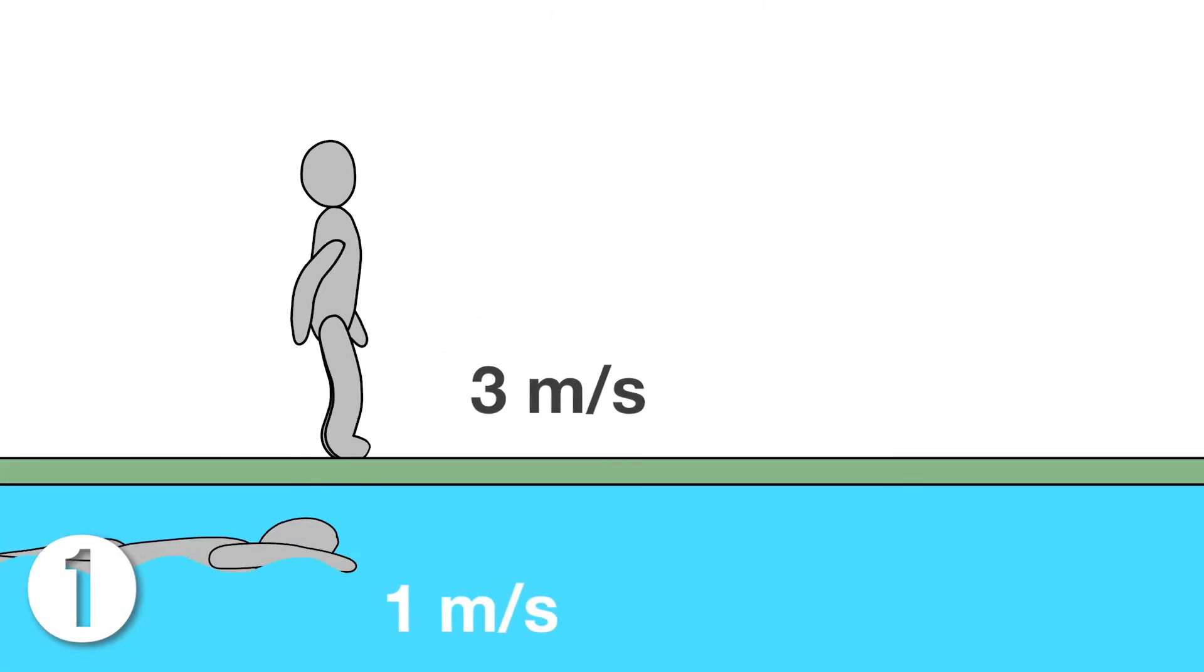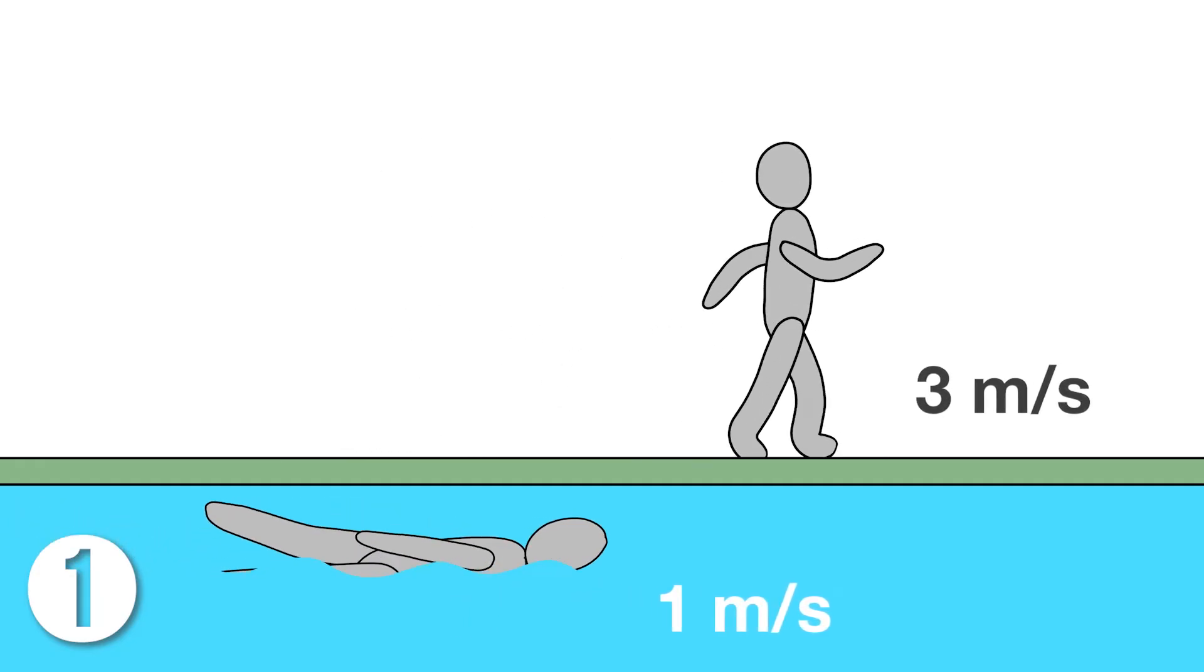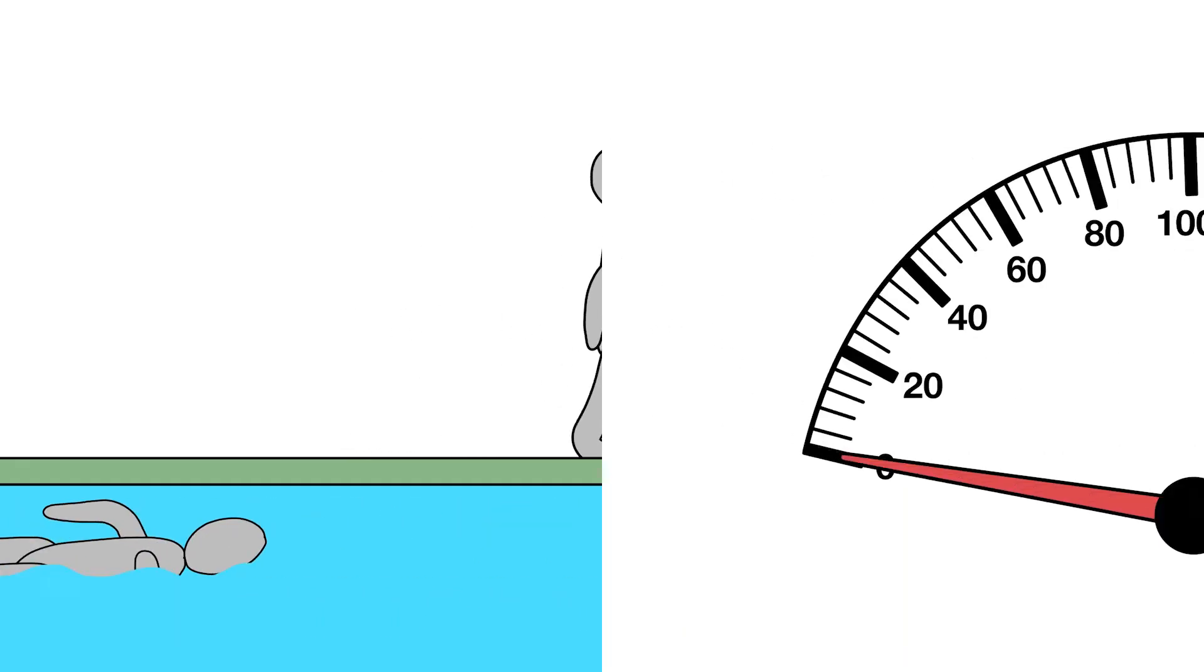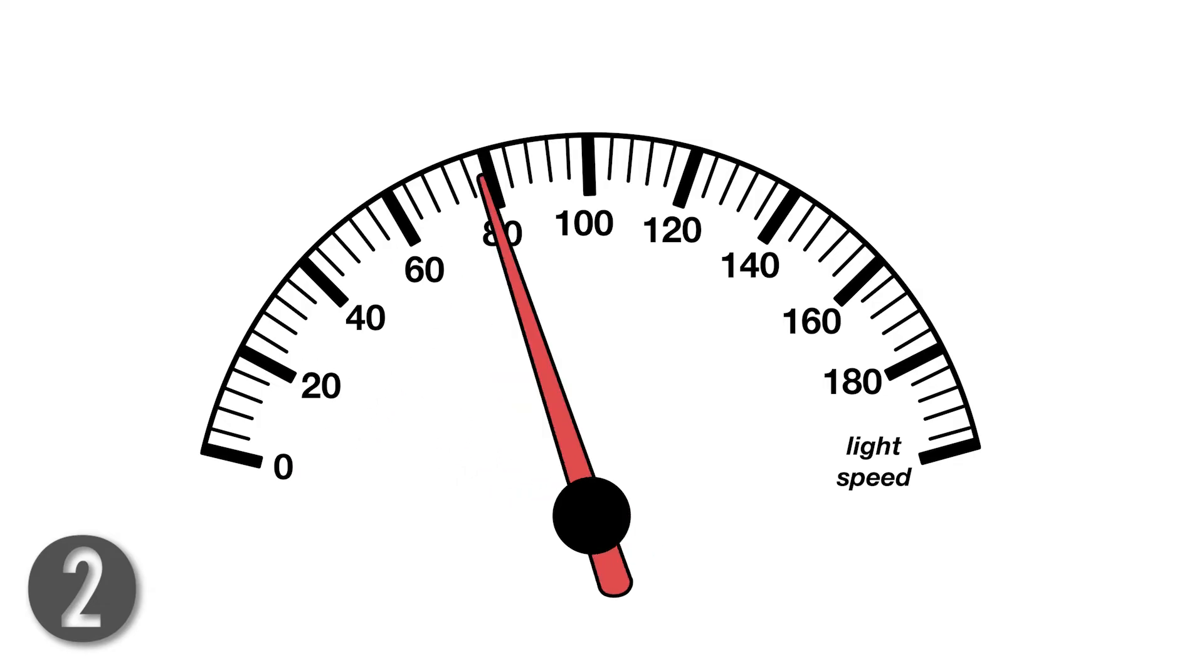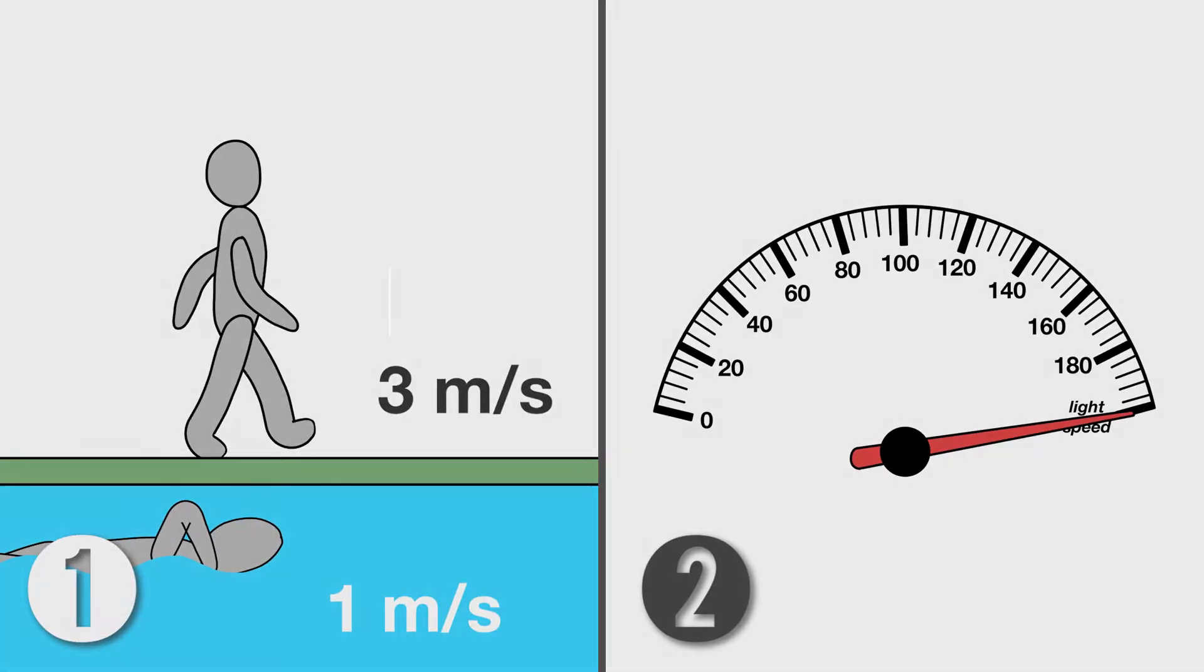One, the laws of physics are the same for all observers moving at a constant velocity relative to each other. Two, the speed of light is the same for all.